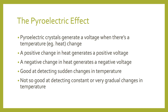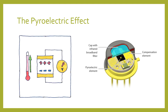This makes PIR sensors really good for detecting sudden changes in temperature, but not so good for detecting constant temperature levels or very gradual changes in temperature — for example, a very slow moving animal. However, they are extremely sensitive to heat, so even a small amount of heat generated by an animal a meter or two away is enough to trigger a voltage change which can be picked up by the processing circuitry.